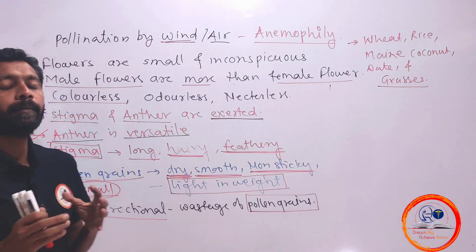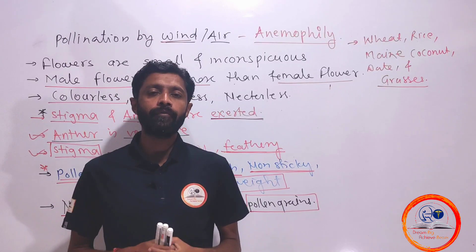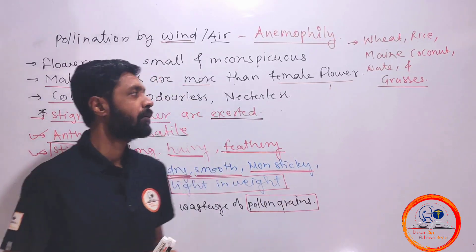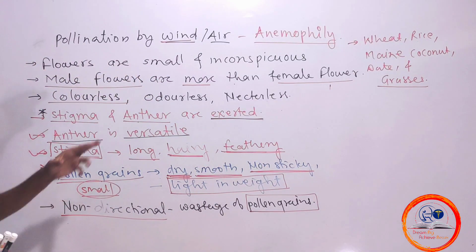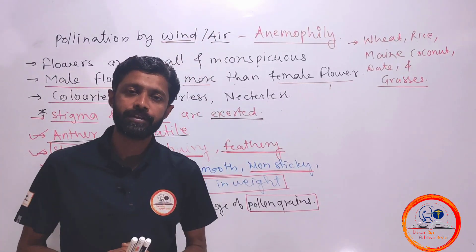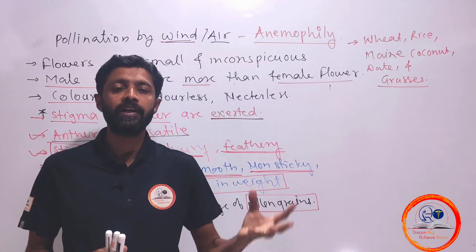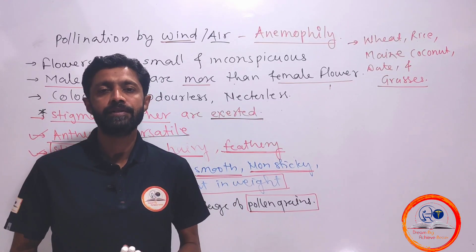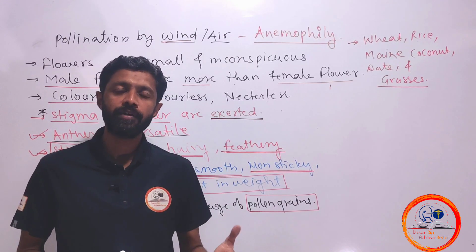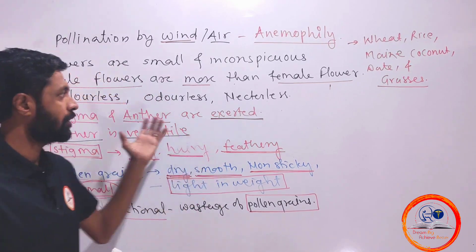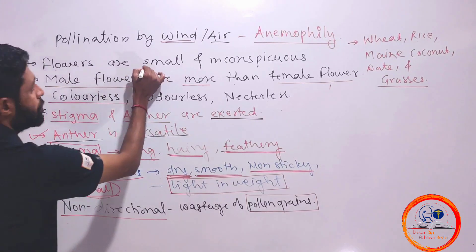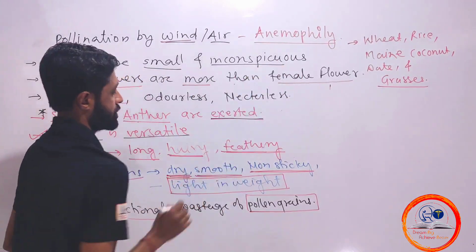Now we will consider what kind of adaptations an anemophilous flower needs to have for carrying out pollination by wind or air. The first adaptation is that anemophilous flowers are small and inconspicuous.